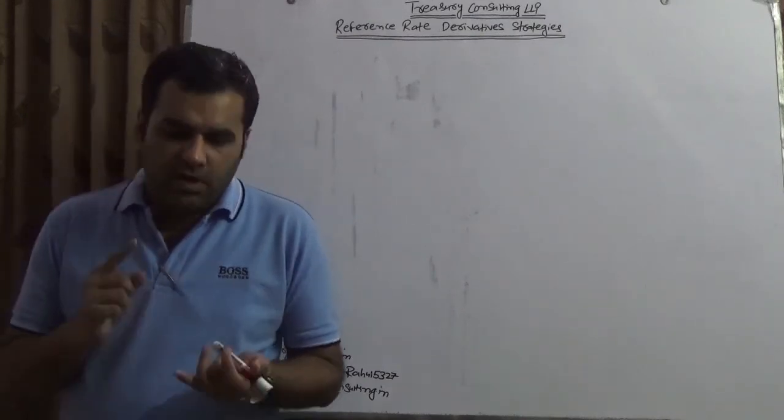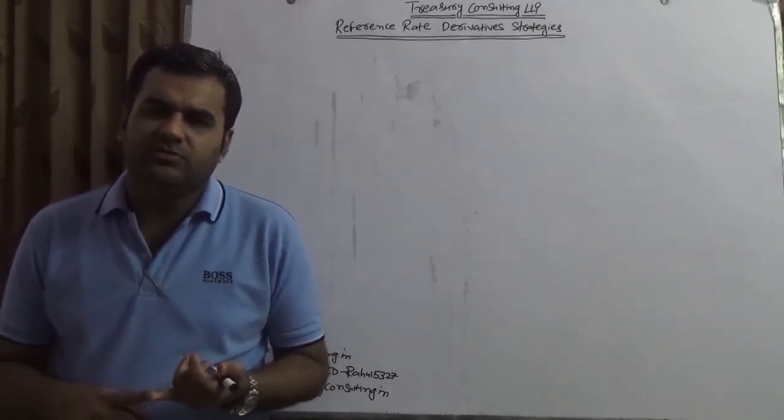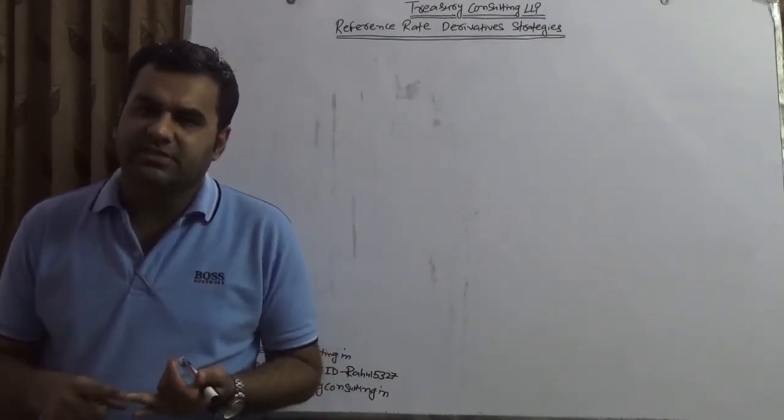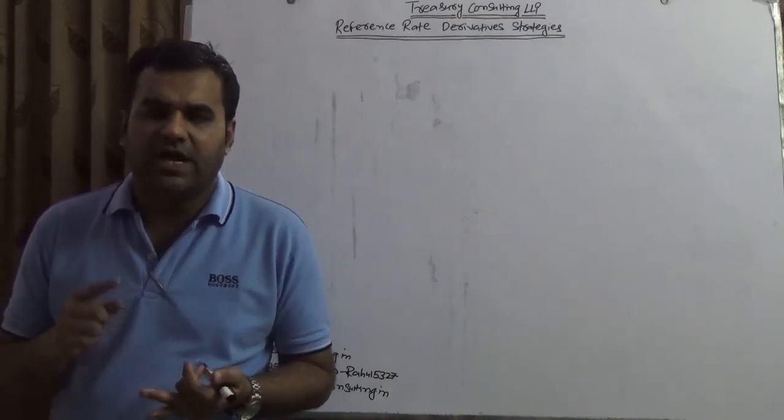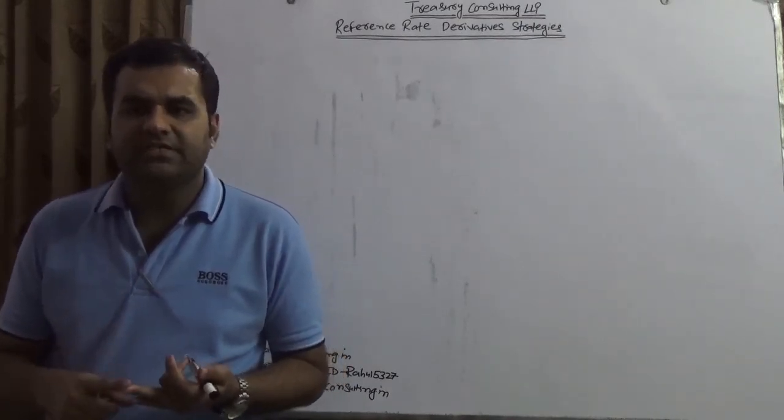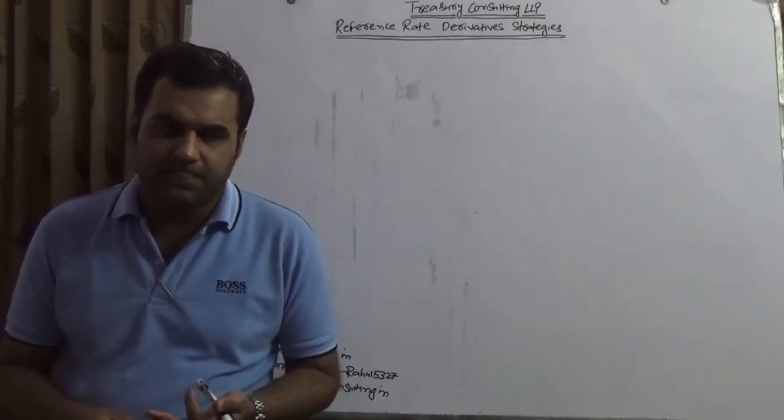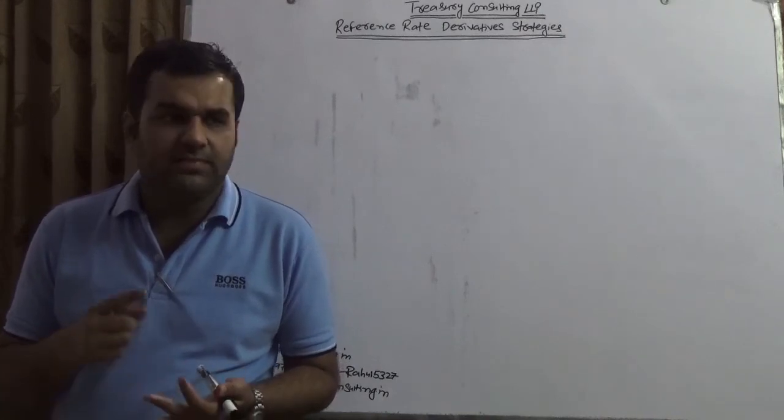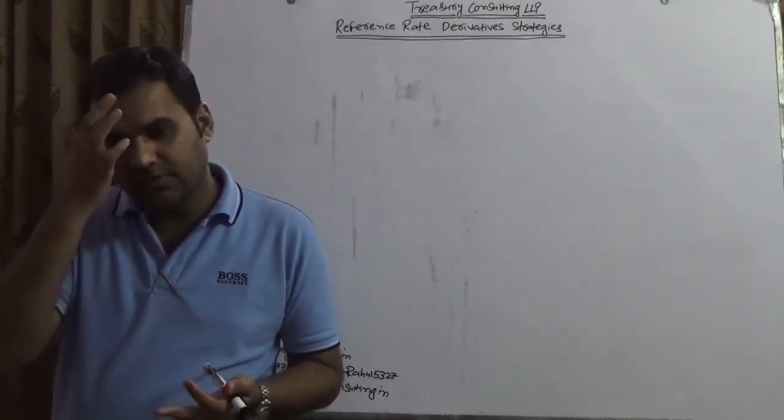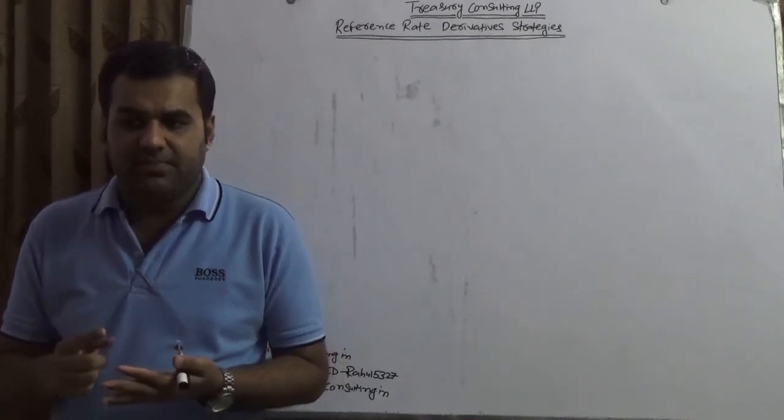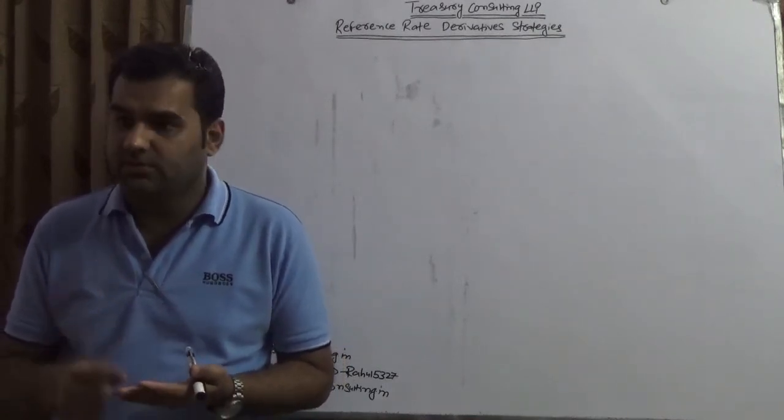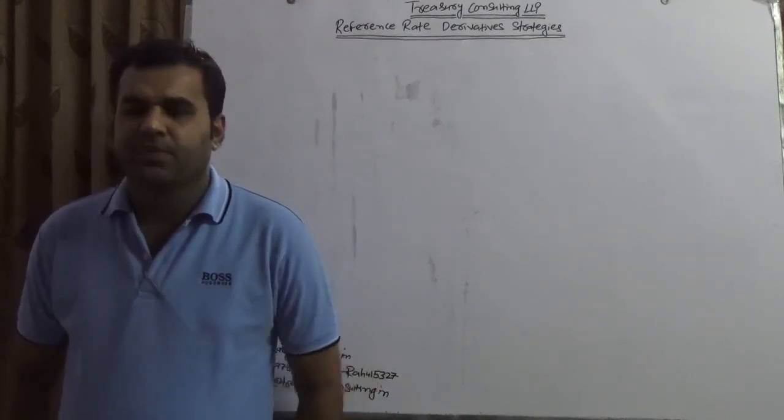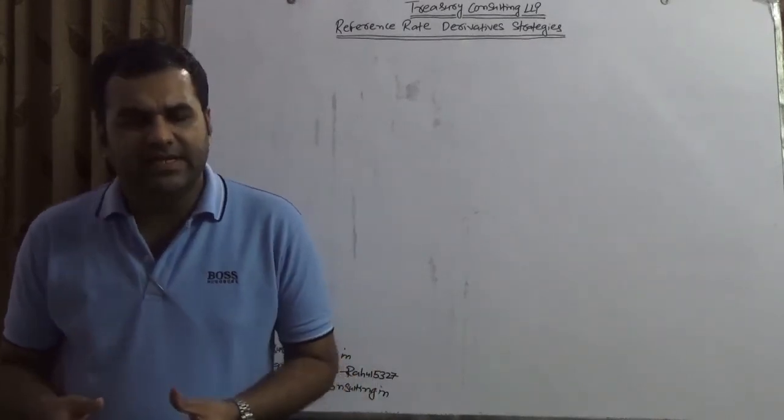Cash flow exposure is an exposure which companies are taking to hedge their cash flows. Fair value exposure is an exposure which the company is taking to hedge all those assets and liabilities which are subject to fair valuation. Examples include external commercial borrowing, FCNR, AR accounts receivable, AP accounts payable, third-party AR, third-party AP, transfer pricing AR, intercompany AR, and intercompany AP.